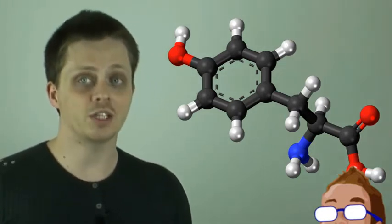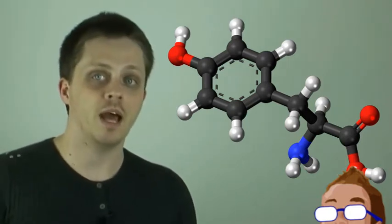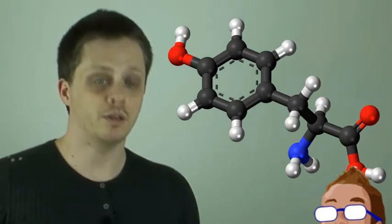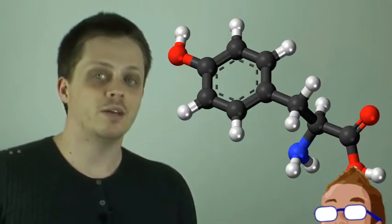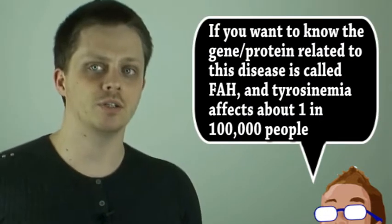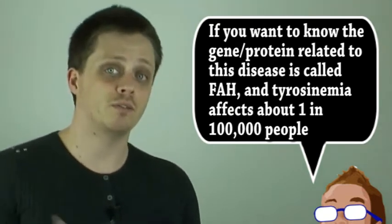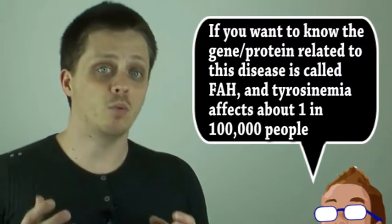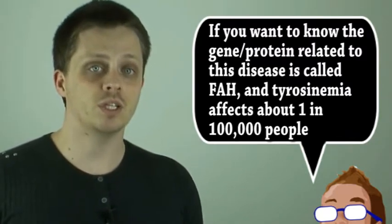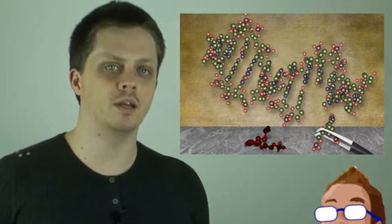The researchers attached an RNA template for the faulty gene into the editing enzyme, and then added a template for the healthy gene. This allowed the enzyme to repair about one in every 250 liver cells in the mice. These modified cells eventually proliferated and eventually made up one-third of the liver. This was enough to cure the condition in the mice.